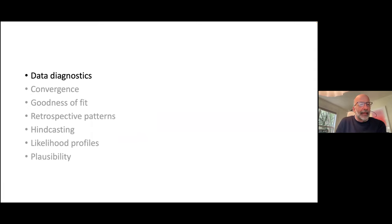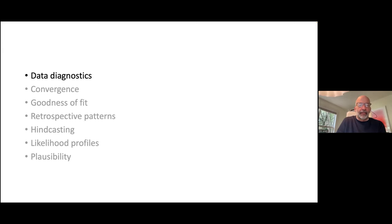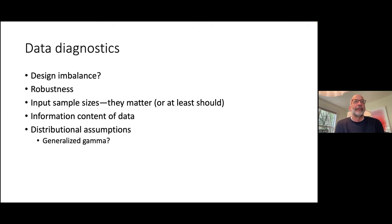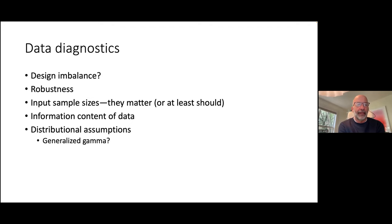One thing I haven't heard too much about is data diagnostics. I put it at the top because it seems like an important thing and leads to all kinds of issues about data weighting. In the context of data diagnostics: are there design imbalances for tuna assessments? Are CPUE indices changing a lot? For southern bluefin tuna, there are significant factors that need to be taken into consideration to account for those design imbalances.